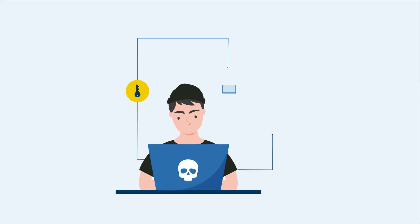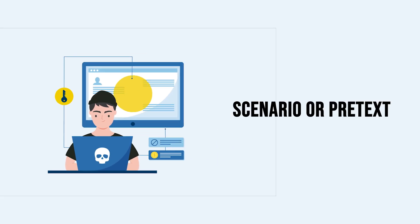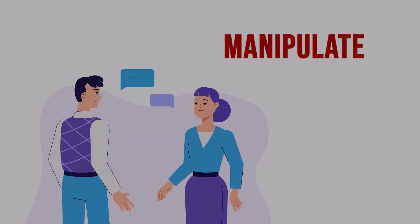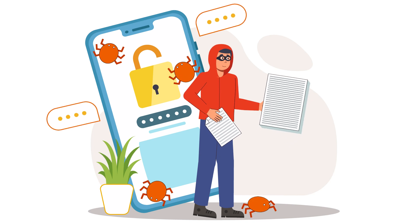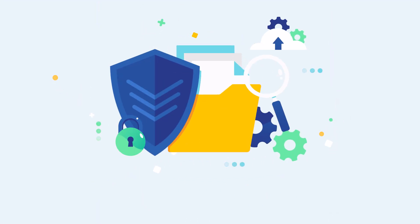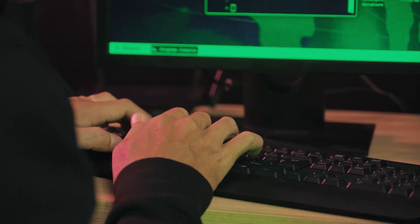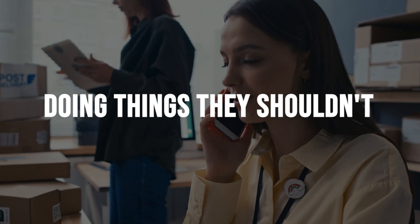Pretexting is a social engineering technique where an attacker creates a fabricated scenario or pretext to manipulate individuals into divulging sensitive information or performing actions that compromise security. The goal of pretexting is to establish a false sense of trust or credibility with the target, leading them to disclose confidential data or carry out unauthorized actions. In other words, it is when a bad actor makes up a story or situation to trick people into sharing private info or doing things they shouldn't.